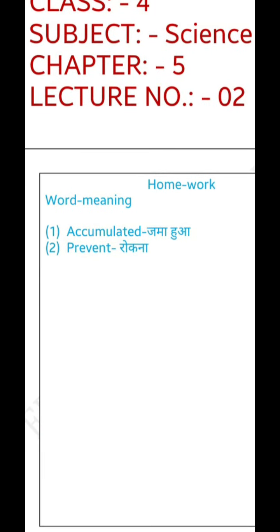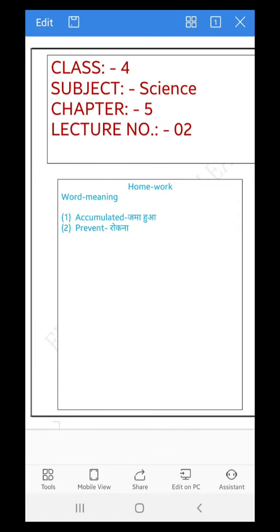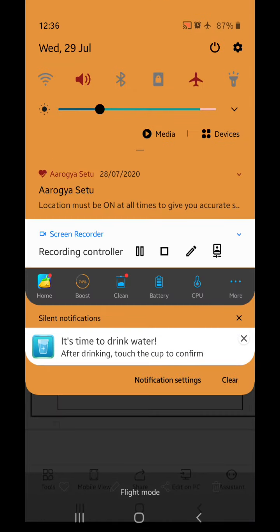Here we complete this lecture. There are two vocabulary words: accumulated means jama hua (collected/piled up), and prevent means rokna (to stop). Do this work in your rough notebook, click a picture, and send it to the school. Thank you — till then, stay safe and have a nice day.